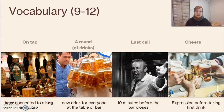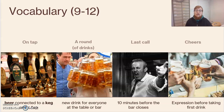Vocabulary 9 through 12. On tap — it's beer connected to a keg and a tap. At the bar, there are levers that you pull and beer comes out — that is on tap. A round of drinks — this is a new drink for everyone at the table or bar. For example, you're with your friends and a friend says 'next round of drinks is on me,' meaning they're going to pay for your next drink. Last call — 10 minutes before the bar closes. This is when you call a taxi or an Uber, finish your drink, wrap up conversation — essentially, you're ending your night. Cheers — this is an expression before taking your first drink. It's sort of like in Spanish when someone says salud, or santé. Cheers.